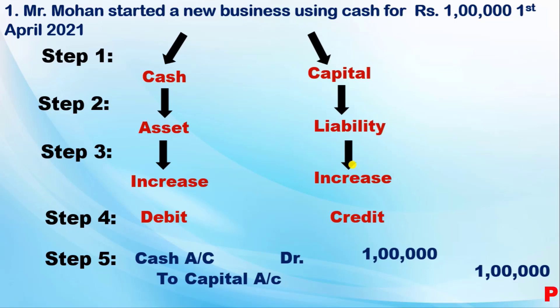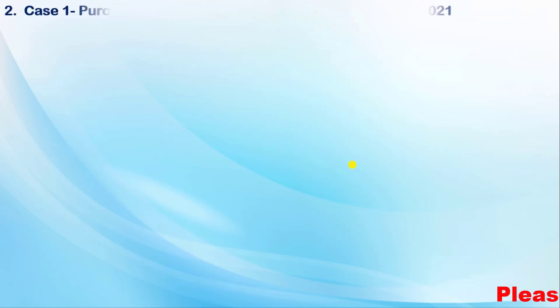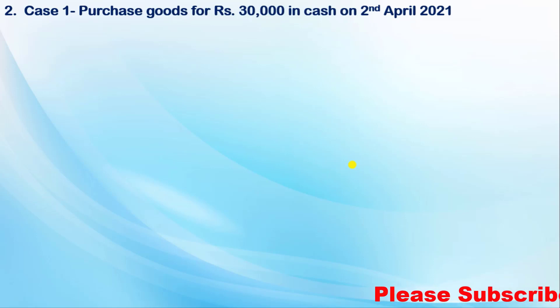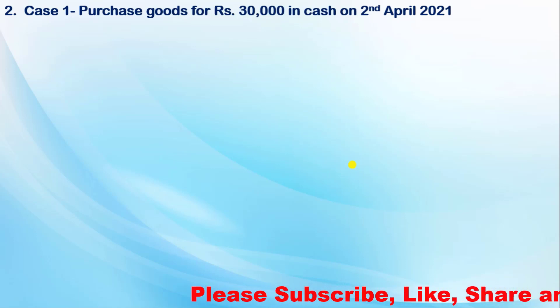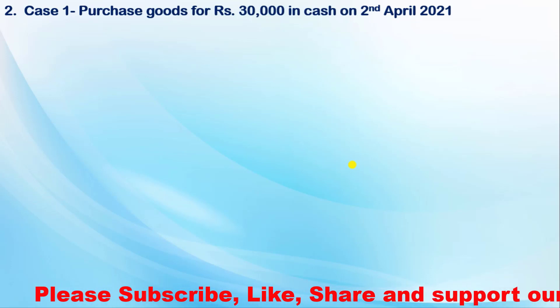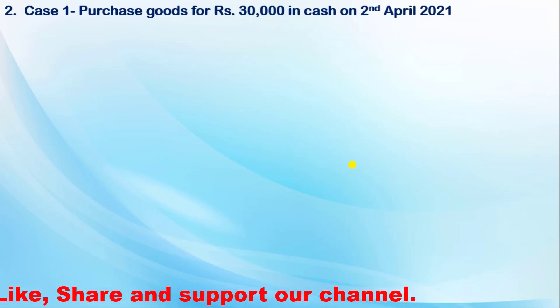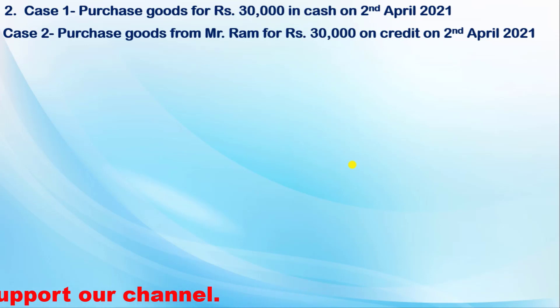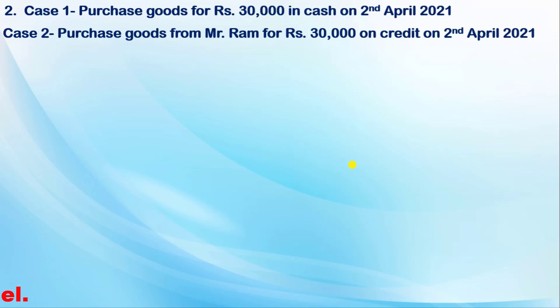The next example has three cases. Case 1: purchased goods for 30,000 in cash on 2nd April 2021. Case 2: purchased goods from Mr. Ram for 30,000 on credit on 2nd April 2021. These are the same purchase but in different cases — in the first you bought goods in cash, in the second you bought goods on credit, so there is no confusion.